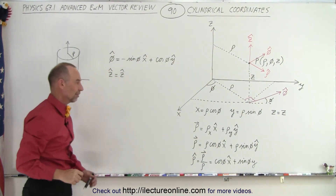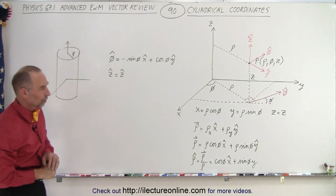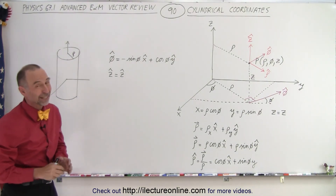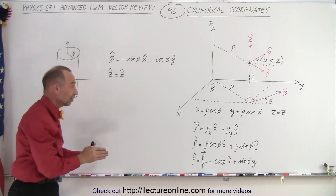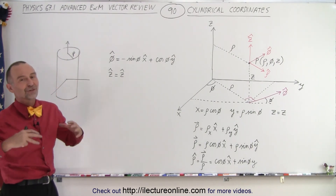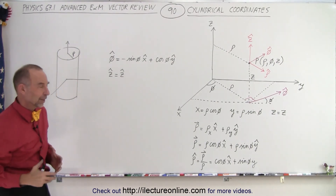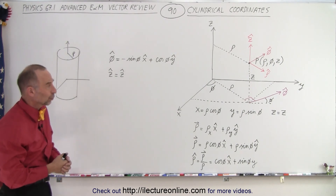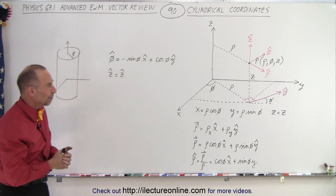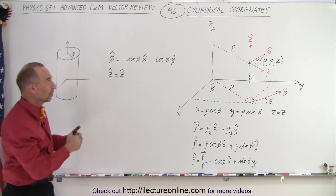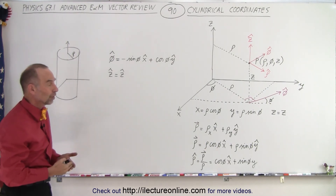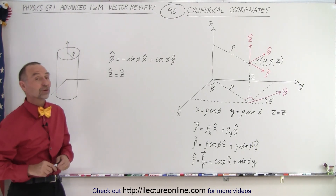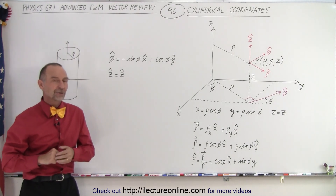The unit vector in the Z direction is the same as in Cartesian coordinates. That is the cylindrical coordinate system. It's a lot easier to work with than the spherical system, though the spherical system is sometimes necessary as well. We'll spend a little time becoming more familiar with cylindrical coordinates and all the vector functions that go along with it, so stay tuned.